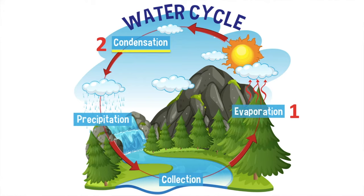Next, condensation takes place. This is when the water vapour in the air cools down. It changes into small drops of water. This forms clouds. Clouds consist of millions of droplets of water.